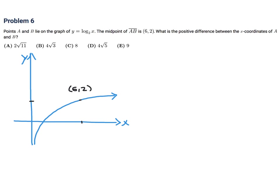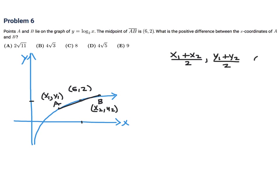They're saying there are two points for which (6,2) is the midpoint, and both are on the curve. Let's call A = (x₁, y₁) and B = (x₂, y₂). The midpoint would be (x₁ + x₂)/2 and (y₁ + y₂)/2, equal to (6, 2). So that means x₁ + x₂ = 12 and y₁ + y₂ = 4.